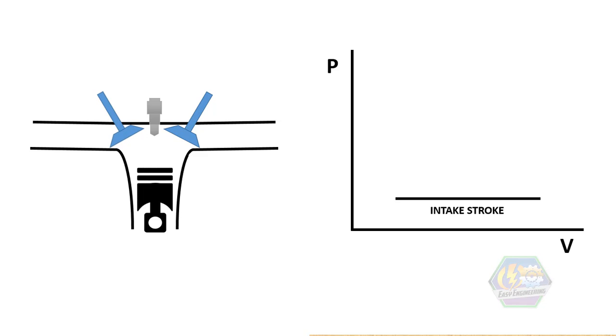Next is the second stroke. Piston travels upward to compress the air and gasoline to make it a combustible mixture. So since this is compression, and as you can see it clearly, the volume decreases and the pressure increases. This is called the compression stroke.